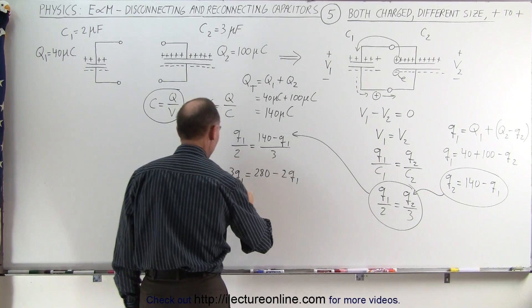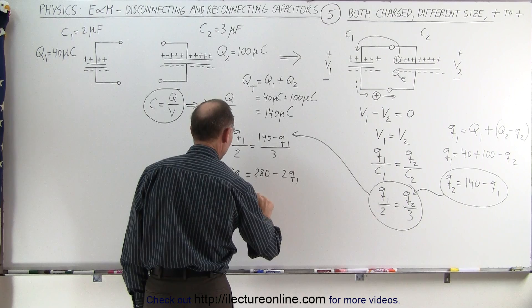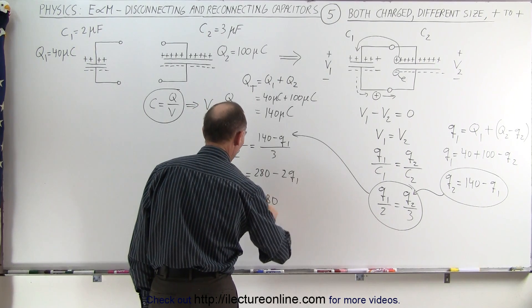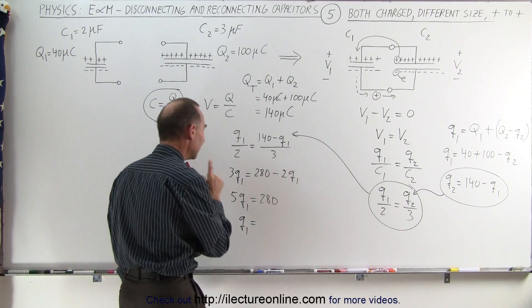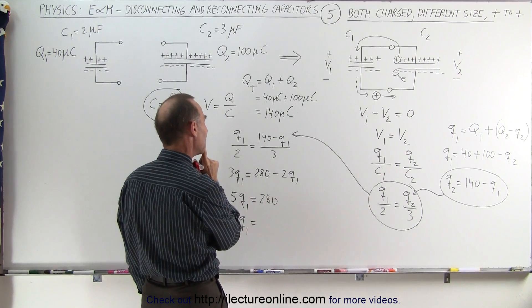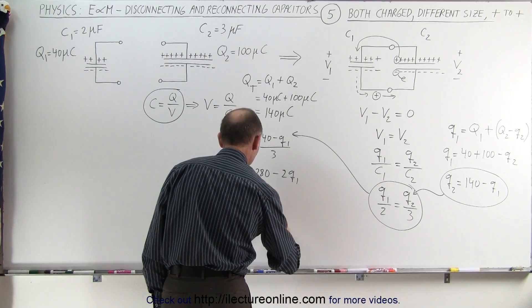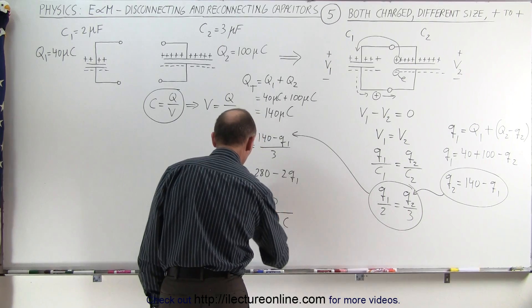Moving these over here, we get 5q1 equals 280, or q1 is equal to 280 divided by 5. That would be 56, and of course that would be microcoulombs.